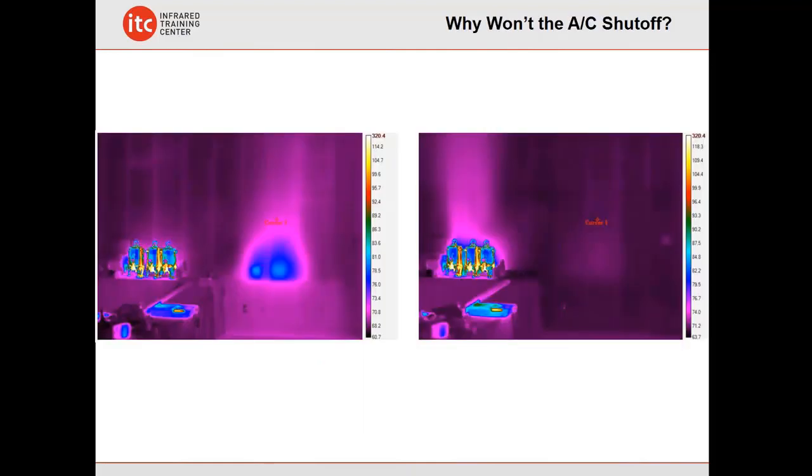We explore our thermal world all the time, all around us. We do training classes in a variety of different locations. This happened to be in a conference room at a hotel out in Las Vegas. A situation where they couldn't get the room to warm up. The air conditioning wouldn't shut off. Turns out the coffee pots were situated underneath the thermostat, causing that thermostat to think the room was much warmer than what it really is. Simply moving them fixed the situation.